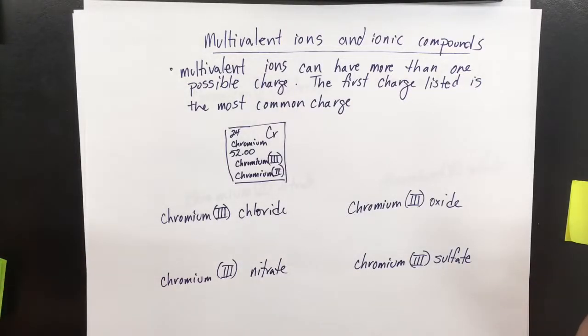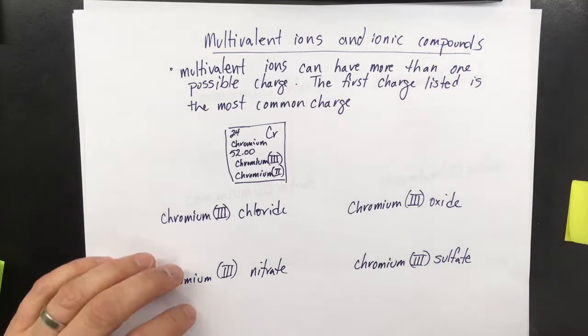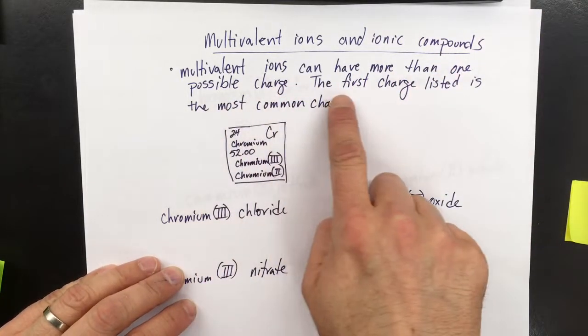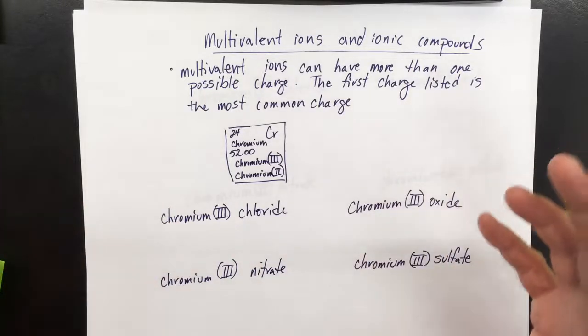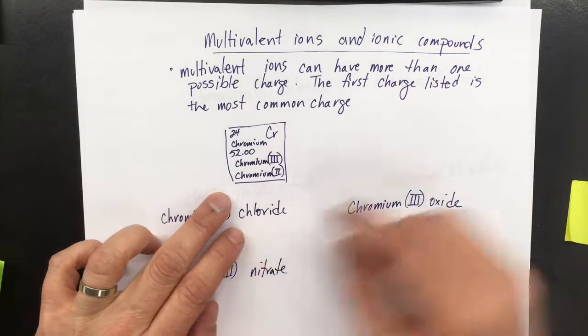The last video on coming up with ionic compound formulas deals with multivalent ions. Multivalent ions can have more than one possible charge. The first charge that is listed in the periodic table is its most common charge.